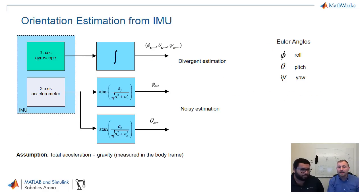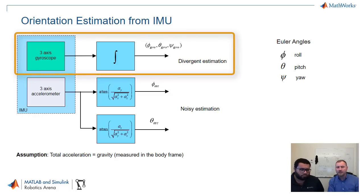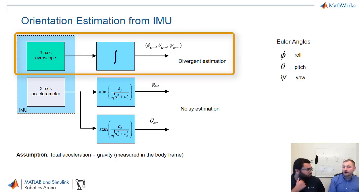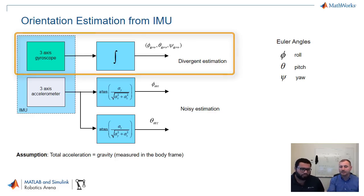From an IMU, we can estimate orientation. An intuitive way is to simply integrate the angular velocities to get the three angles: roll, pitch, and yaw. However, as mentioned, we have this bias. As we integrate, the output will be drifting, giving us a growing unbounded error. That's a big issue with just integrating the angular velocity.